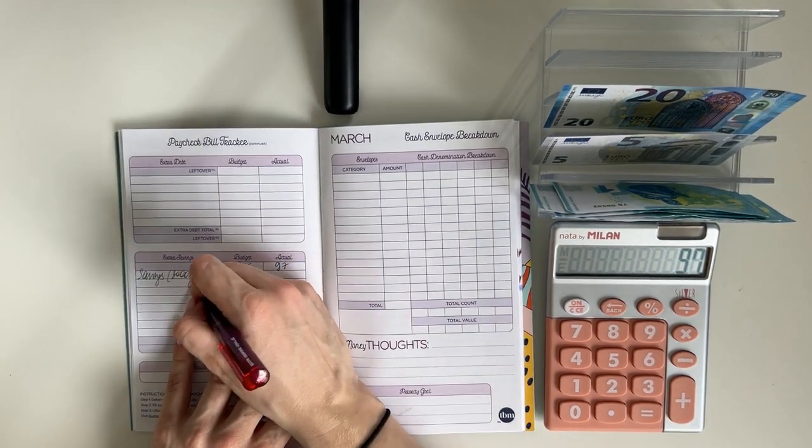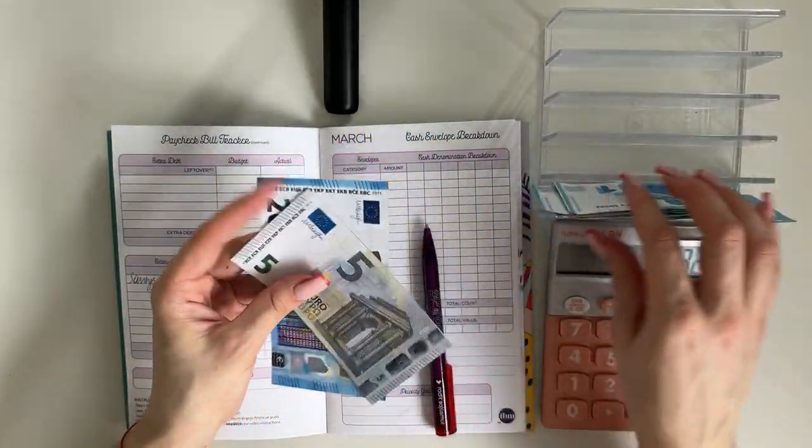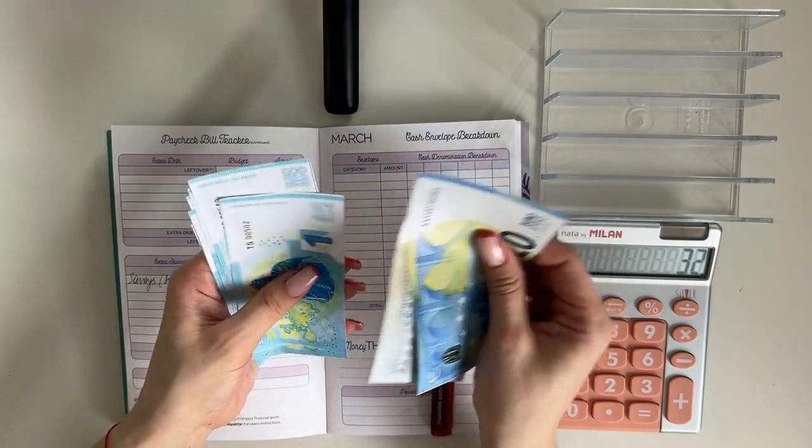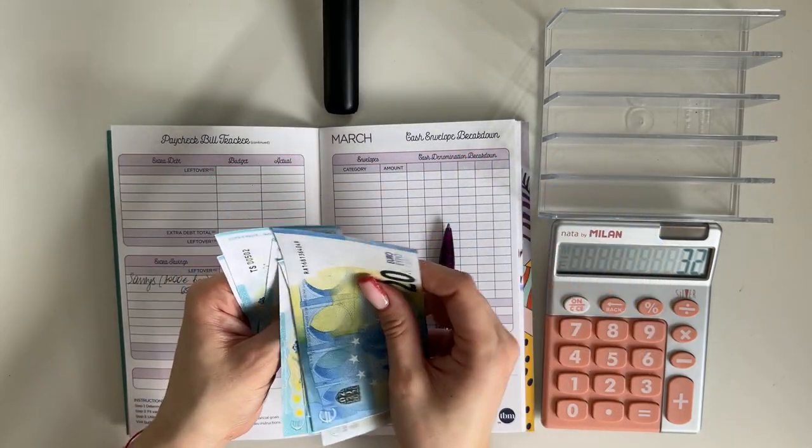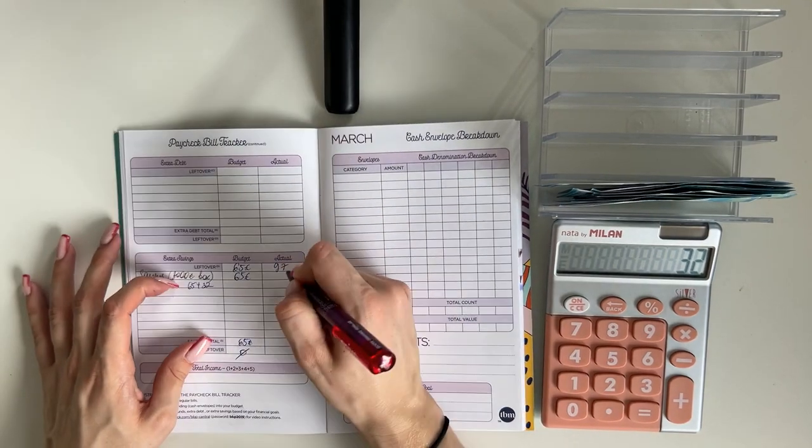And we're bringing that here to savings. And we did stuff 65 last week, so we should have 97 minus 65, 32 euros on the cash tray. Let's see, 20, 25, 26, 27, 28, 29, 30, 31, and 32, indeed.